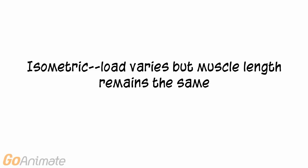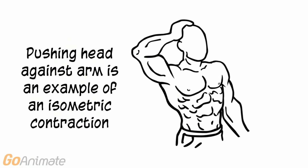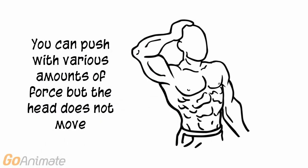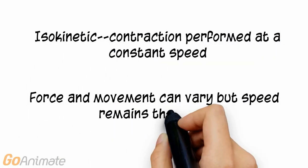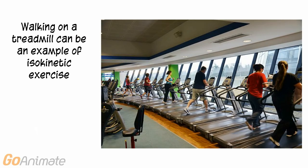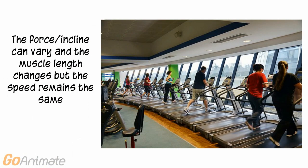In an isometric contraction, the force can vary but the muscle length remains the same. Pushing your head against your arm is an example of an isometric contraction. You could push hard or soft but your head would not move. In an isokinetic contraction, both the force and muscle length can vary. What remains the same is the speed. Walking on a treadmill can be an example of isokinetic contractions. The force can vary with different inclines and the leg muscle lengths can change, but the speed of the exercise remains the same.